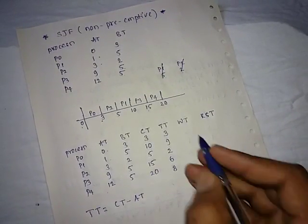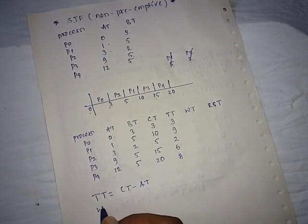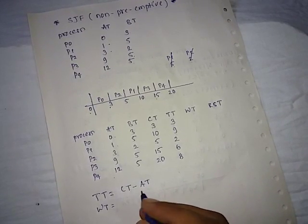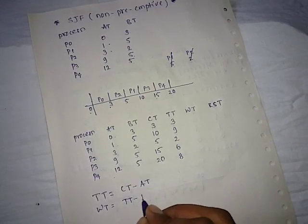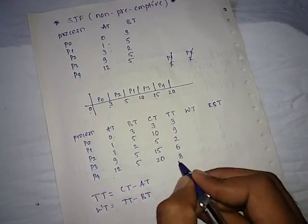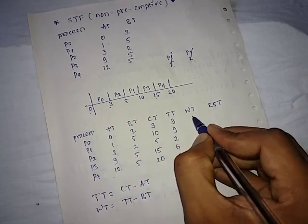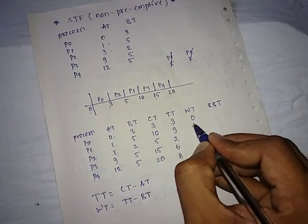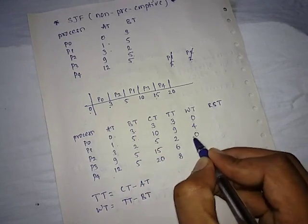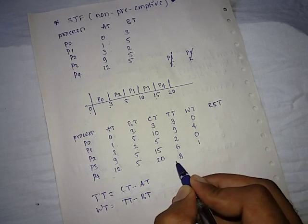Now the waiting time. Waiting time is calculated by the formula turn around time minus burst time. So turn around time we have calculated here, burst time is already given in your question. So 3 minus 3 becomes 0, 9 minus 5 becomes 4, 2 minus 2 is 0, 6 minus 5 is 1, and 8 minus 5 becomes 3.